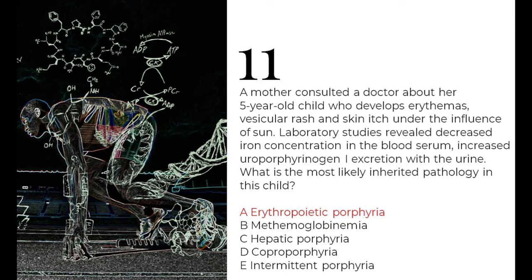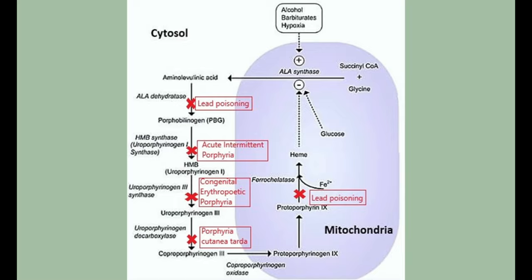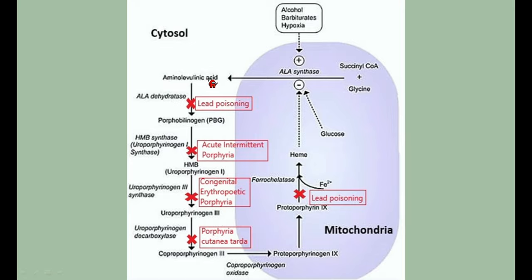To understand this, we need to review heme synthesis biochemistry. Heme is part of hemoglobin in red blood cells. The basic substrates are succinyl CoA and glycine, which combine in the mitochondria with the enzyme ALA synthase to form aminolevulinic acid — this is the first and rate-limiting step. ALA is then converted into porphobilinogen (PBG) with the help of ALA dehydratase.